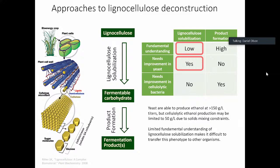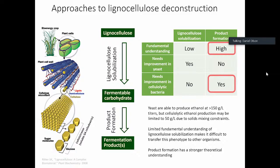On the other hand, engineering thermophilic bacteria for product formation — the theoretical basis is much better studied. We know a lot about enzymes and how to study metabolism, and we have various techniques for this. So looking at the challenge, on one hand engineering yeast to solubilize cellulose, and on the other hand engineering thermophilic bacteria to produce ethanol — it's my opinion that engineering the bacteria to produce ethanol is, although challenging, less challenging than engineering yeast to be really good at breaking down cellulose.